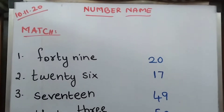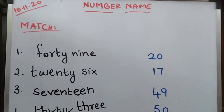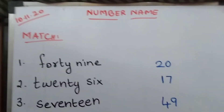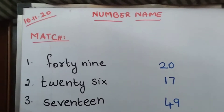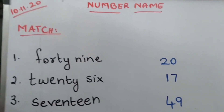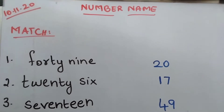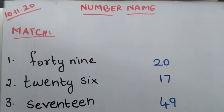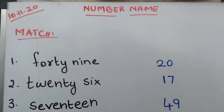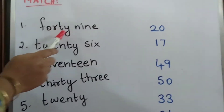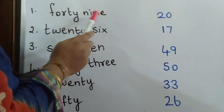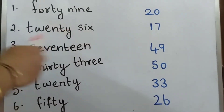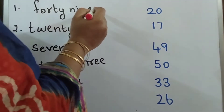Children, before moving to today's topic, let's give a quick recap of what we learnt last week. We learnt number names. So, matching — we have to match the number name with the respective numbers. F-O-R-T-Y is 40, N-I-N-E is 9, so 49. Where is 49 here? Match. 49.